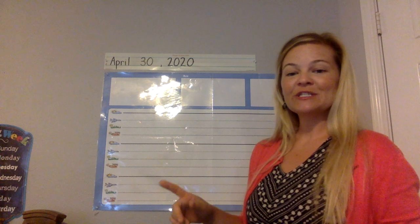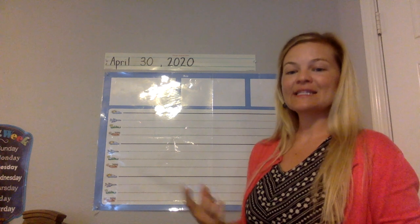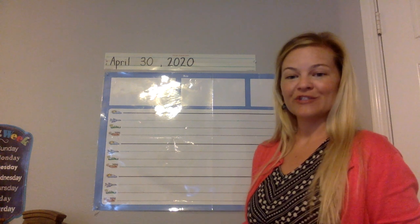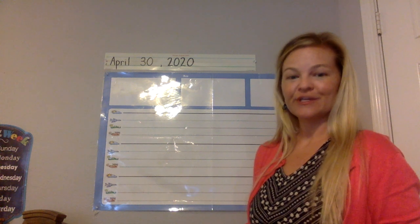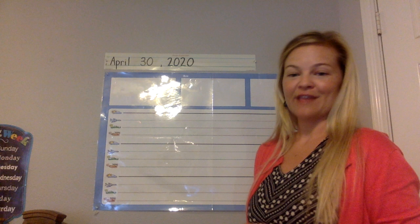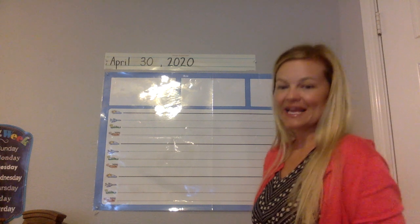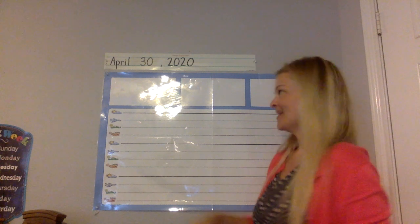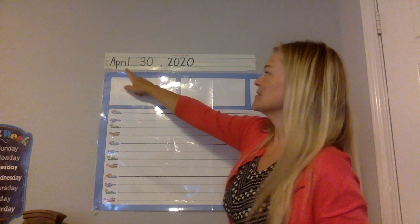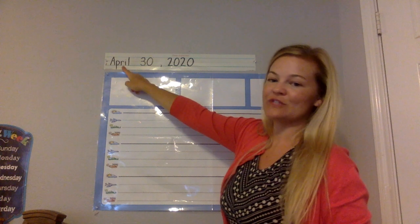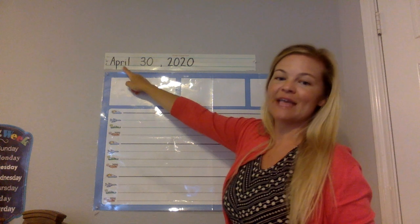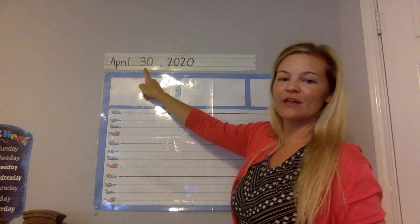Open to the next blank page in your journal. You should see April 29th for yesterday, and we just figured out it's April 30th.